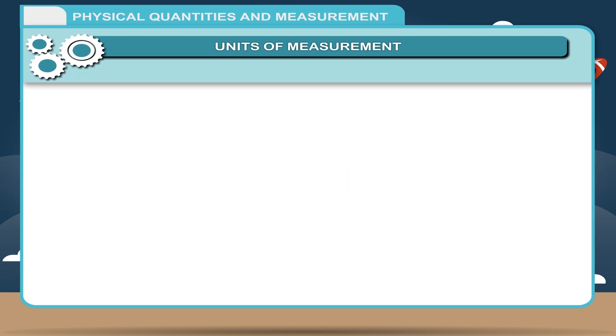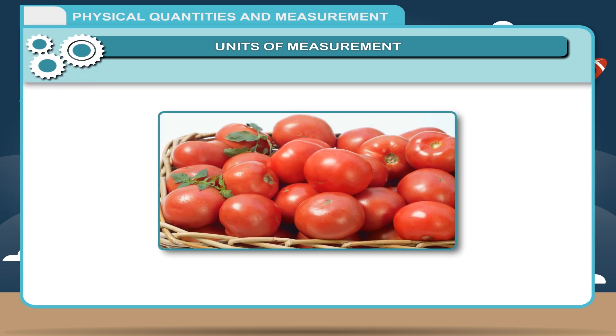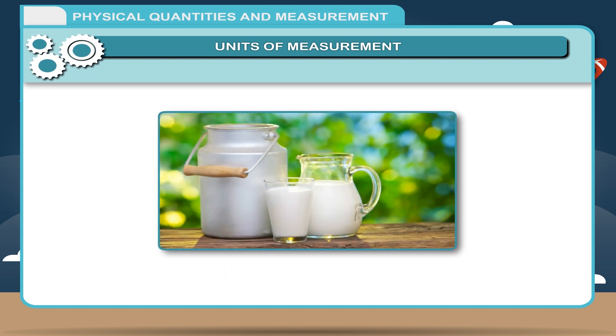Examples: When we say quantity of tomato is 5 kilograms, then 5 is the numerical value and kilogram is the unit of mass. If the amount of milk is 4 litre, then 4 is the numerical value and litre is the unit of volume.